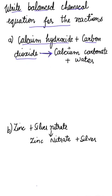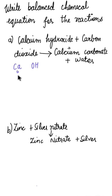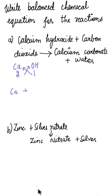Let's start making the formula of calcium hydroxide. Calcium is Ca and hydroxide is OH. The valency of Ca is 2 and OH is 1. Using the cross-multiplication method, the formula becomes Ca(OH)₂. This is an aqueous solution, so we note that state.